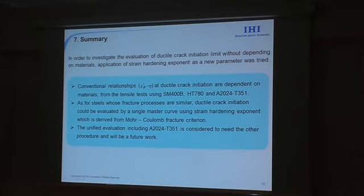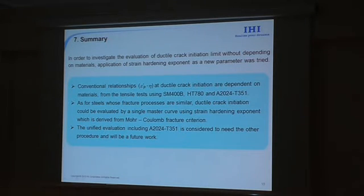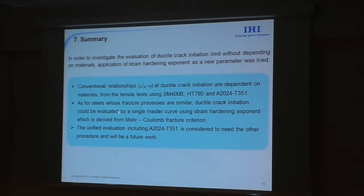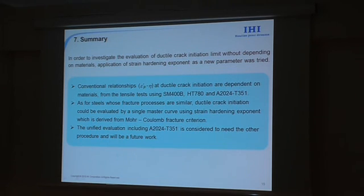This is the summary of my presentation. In order to investigate the evaluation of ductile crack initiation limit without depending on materials, we tried to apply the strain hardening exponent. We found that conventional relationships at ductile crack initiation are dependent on materials. For steels whose fracture processes follow Type A or B, ductile crack initiation could be evaluated by a single master curve using the strain hardening exponent, based on the Mohr-Coulomb fracture criterion. The proposed evaluation including aluminum alloy and under lower stress triaxiality conditions is considered to need another procedure and will be future work.